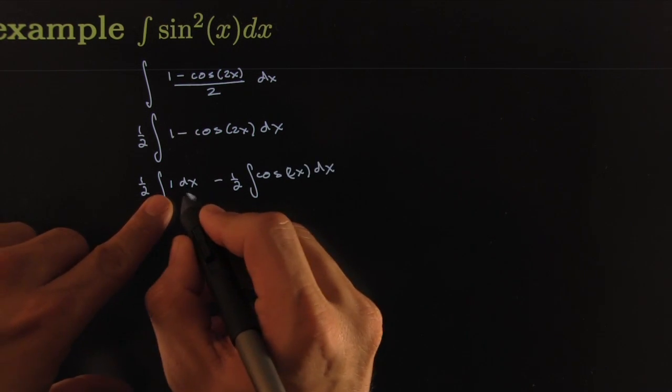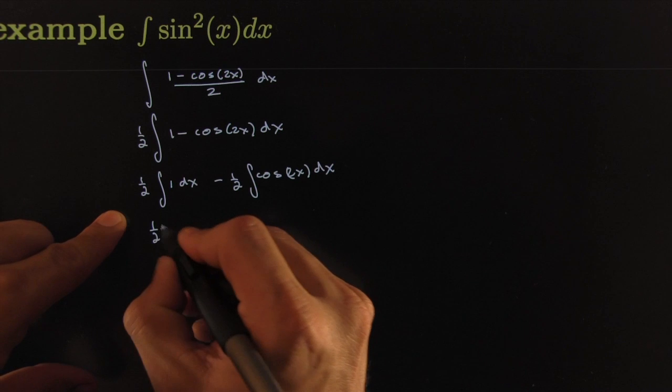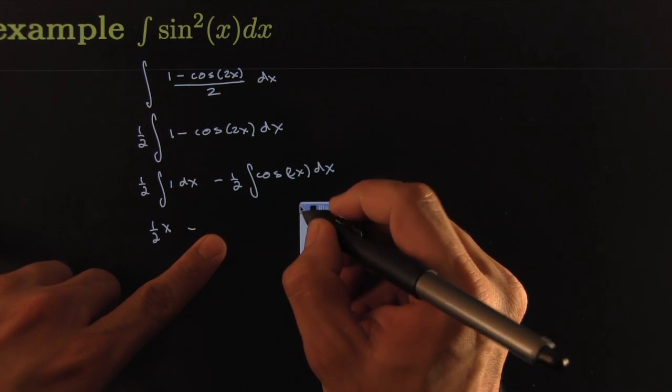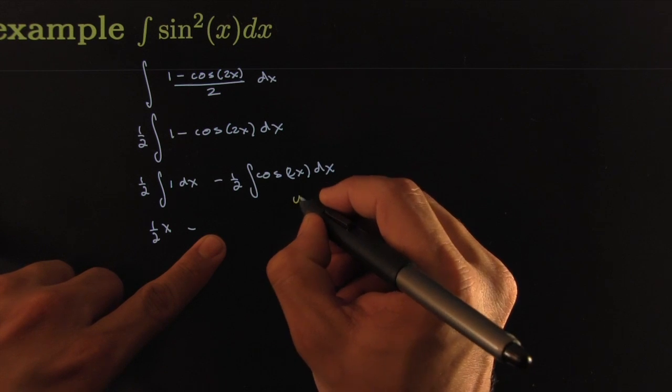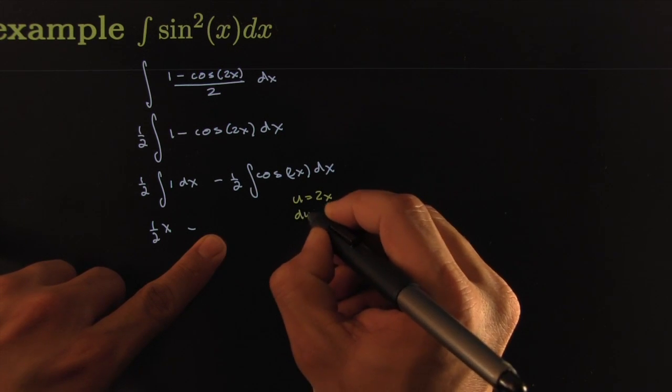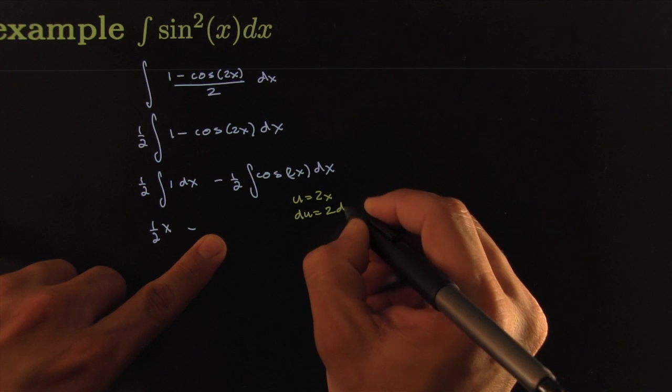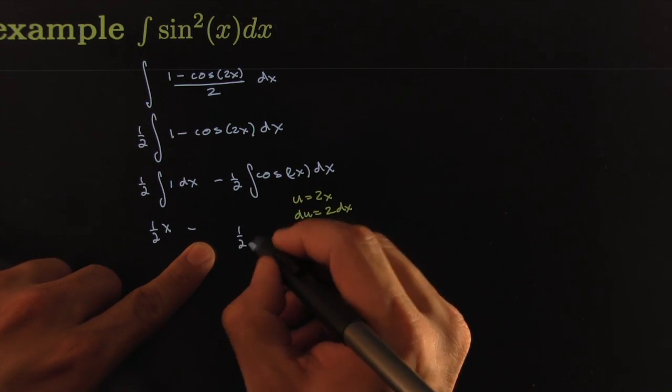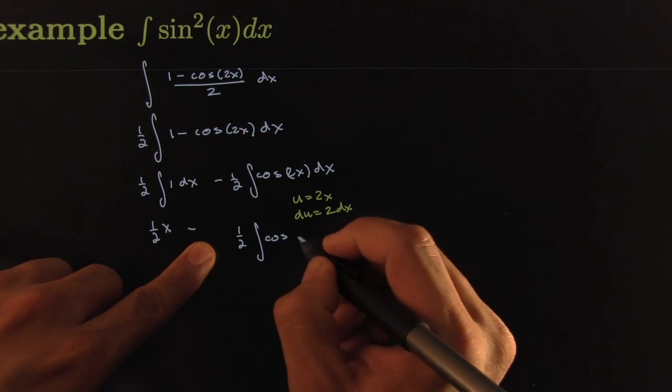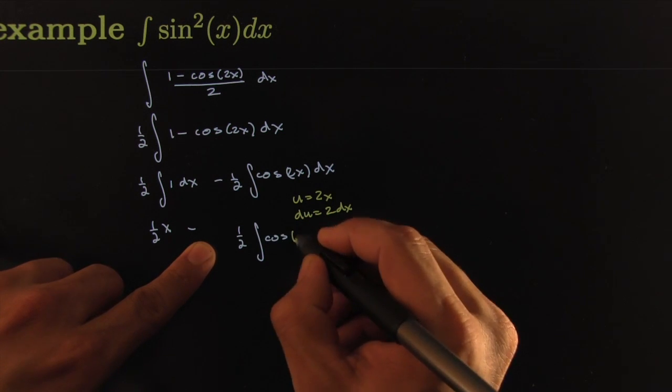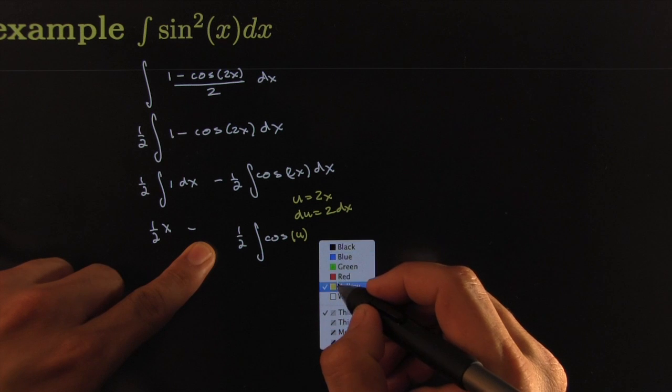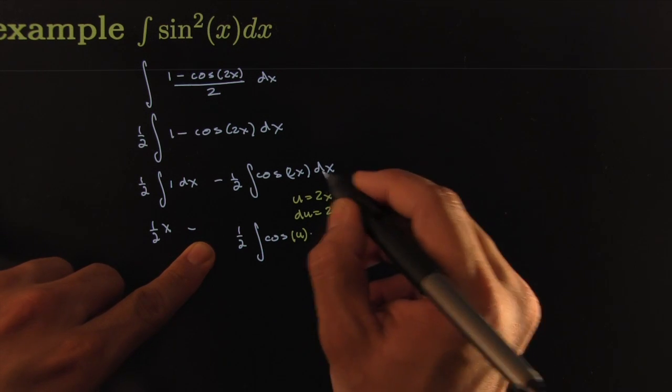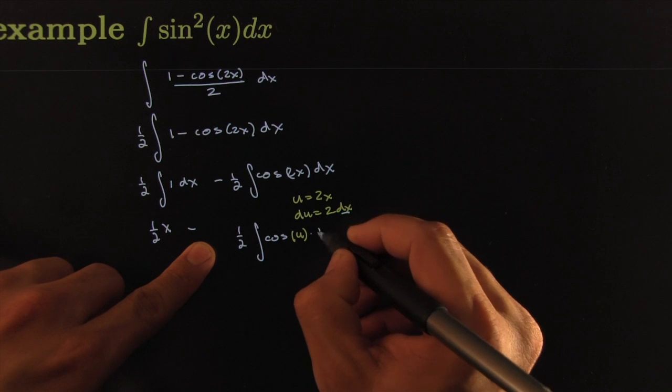This one would just be a basic one. Integral of 1 is x, so I'd have x. This one I could make use of u-substitution. Let's go with u equals 2x, then the differential would be equal to 2 dx. Then my integral would be equal to one-half integral of cosine of u, and for the dx I would have dx equals one-half of a du.